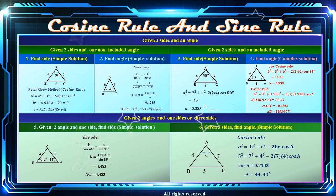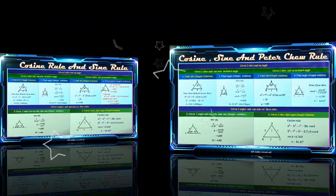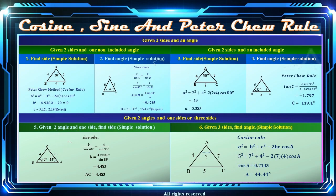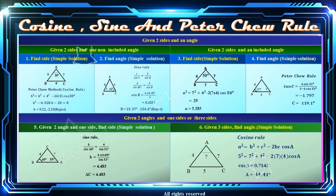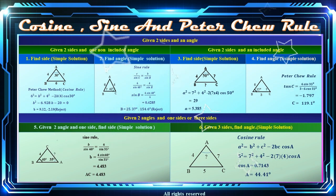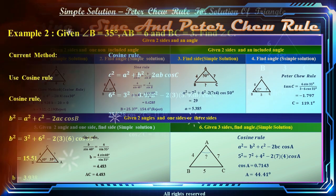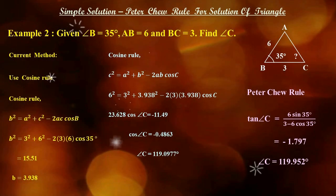Therefore, we need to learn another rule to simply solve triangle problems of type 4. That rule is the Peter Chu rule. As shown in the figure, the Peter Chu rule can solve triangle problems of type 4, simply compared to the cosine rule. Therefore, the Peter Chu rule, like the sine rule, helps solve triangle problems that cannot be solved simply by the cosine rule. As shown in example 2, the Peter Chu rule can solve triangle problems of type 4, simply compared to the cosine rule.